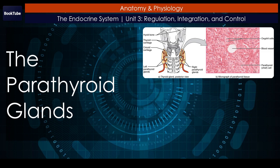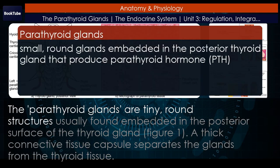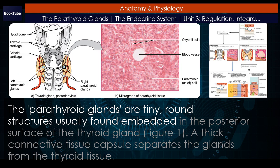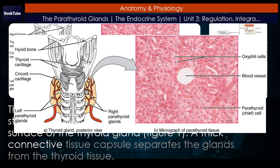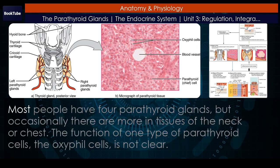The parathyroid glands are tiny, round structures usually found embedded in the posterior surface of the thyroid gland. A thick connective tissue capsule separates the glands from the thyroid tissue. Most people have four parathyroid glands, but occasionally there are more in tissues of the neck or chest.